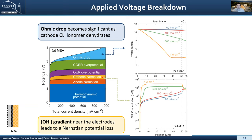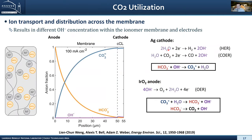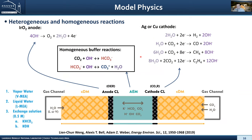Using the model, we can do applied voltage breakdowns to understand what's happening as we apply a potential. We try to minimize the ohmic drop and CO2 mass transport resistances. The ohmic drop is nonlinear with total current density. As we drive harder toward an amp per cm², we're decreasing the amount of water, due to the way water electroosmotic flux and diffusional flux interplay, as well as the fact that water is a reactant. For example, we need eight water molecules to make ethylene.